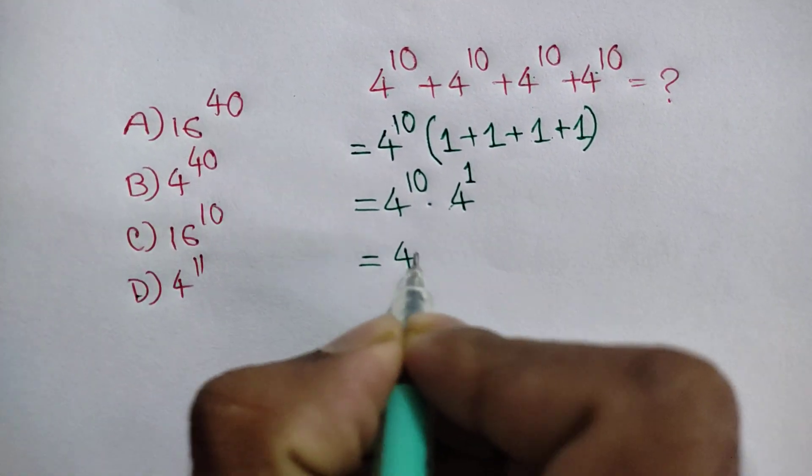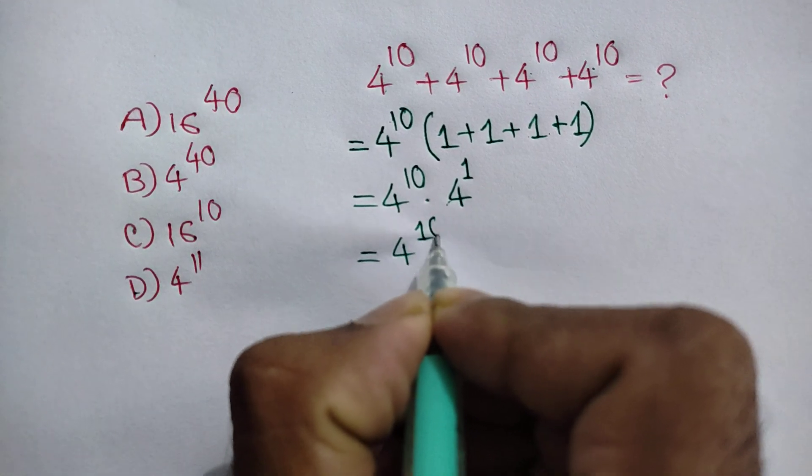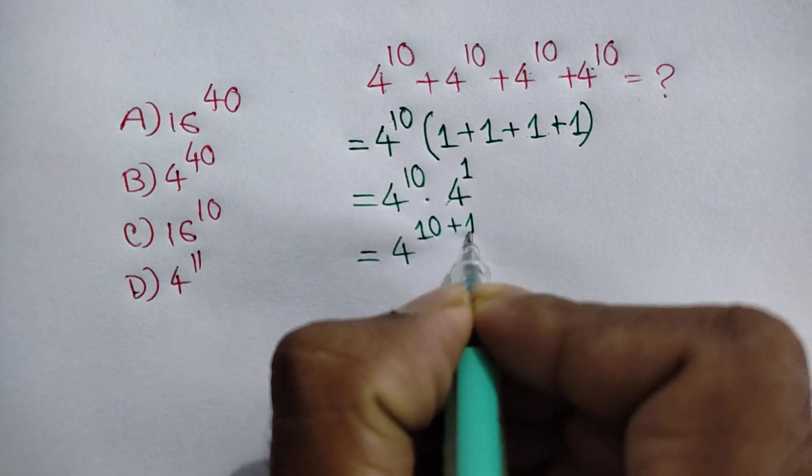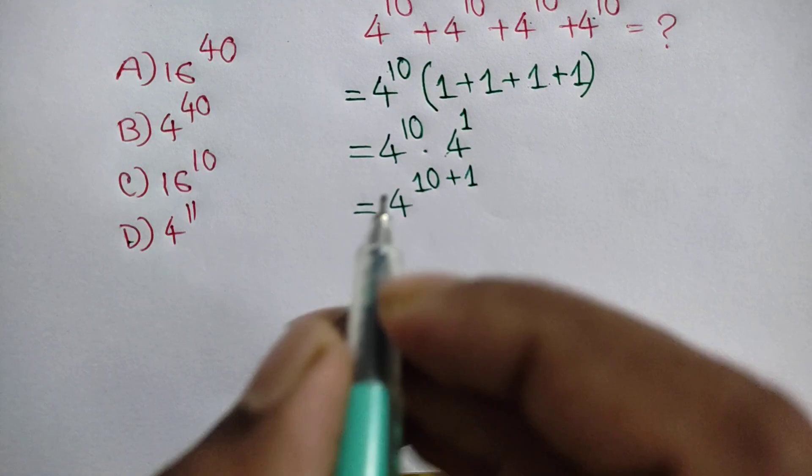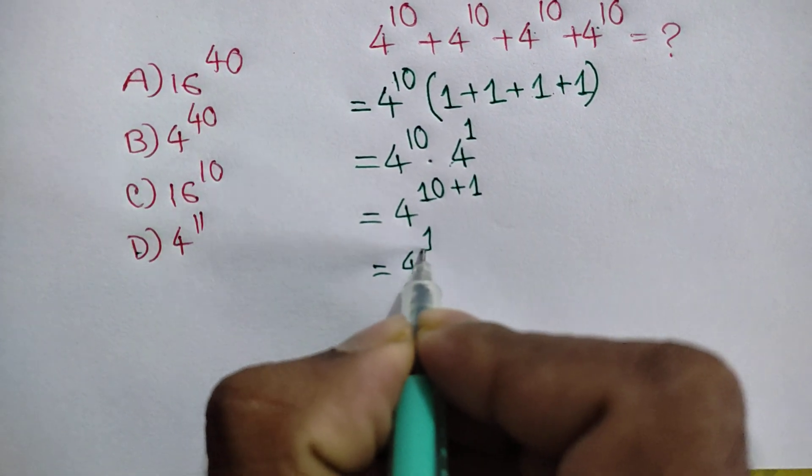Next, we can write 4 power 10 plus 1. Next, 4 power 11.